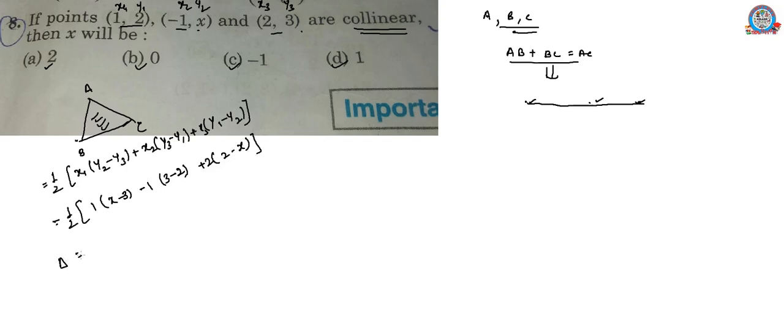So area of triangle equals half times (x minus 3 minus 1 plus 4 minus 2x). The area of triangle is (minus 3 minus 1 is minus 4) so we get minus x by 2.